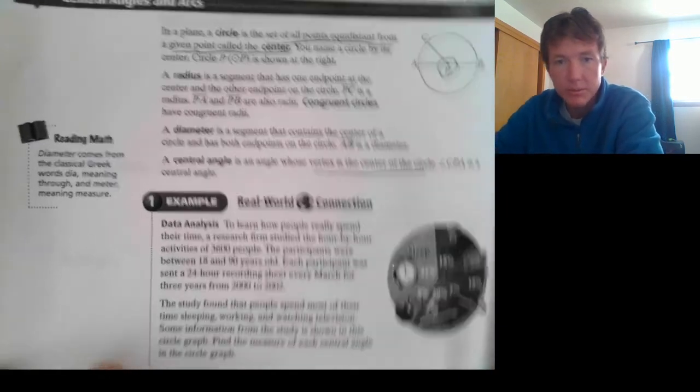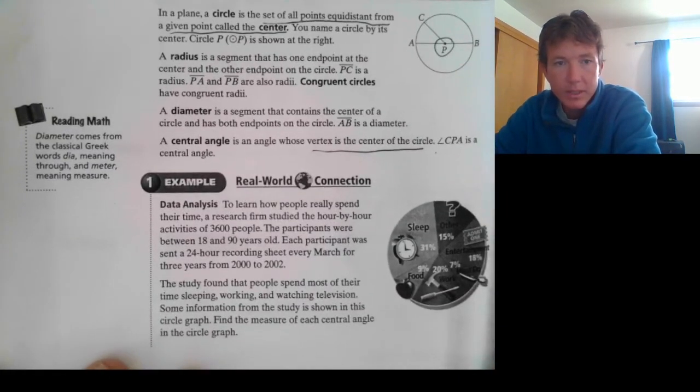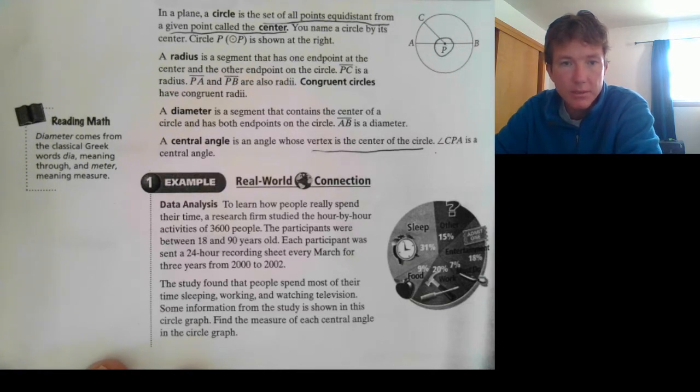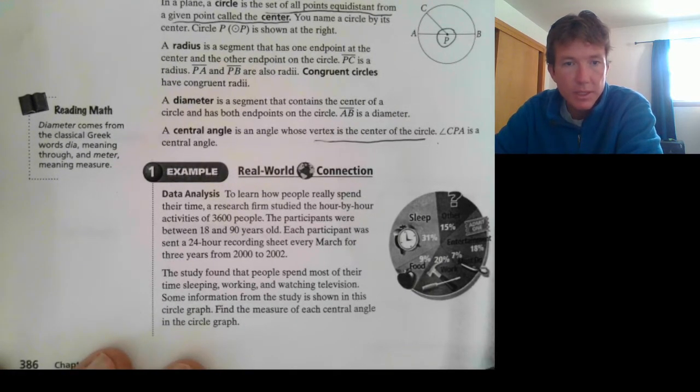Let's look at a real-world example containing circles. Data Analysis: To learn how people really spend their time, a research firm studied the hour-by-hour activities of 3,600 people. The participants were between 18 and 90 years old. Each participant was sent a 24-hour recording sheet every March for three years from 2000 to 2002. The study found that people spend most of their time sleeping, working, and watching TV. Some info from the study is shown in this circle graph. Find the measure of each central angle in the circle graph.